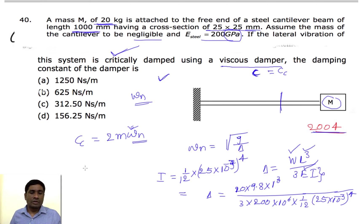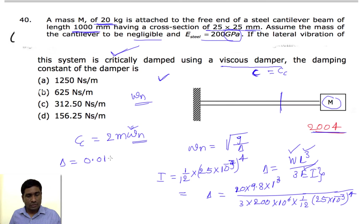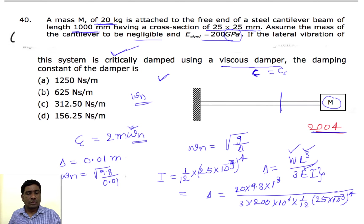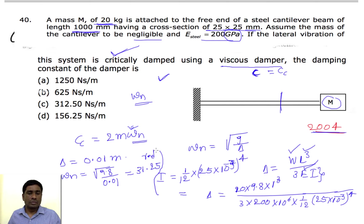The value of delta equals 0.01 meters. From this value we find ωn: ωn = √(g / δ) = √(9.81 / 0.01) = 31.25 radians per second.